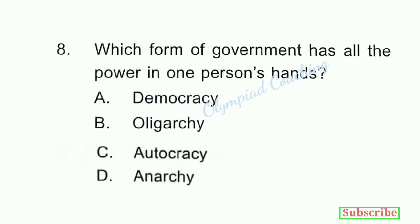Question number 8: Which form of government has all the power in one person's hands? Option C is correct — Autocracy. In democracy, there are elected members who are in government. Option B — Oligarchy — is a government where a small number of people hold all the political power. Option D — Anarchy — is a state of political disorder, or we can say absence of government.